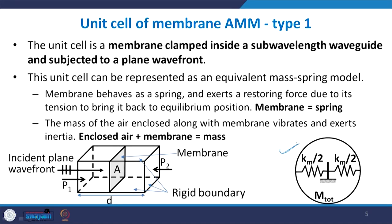The equivalent mass-spring model has the membrane as the spring and the enclosed air plus membrane mass as the total mass. This is m_total = mass of membrane + mass of air contained within the unit cell. If K_m is the stiffness of the membrane, the system oscillates to and fro and can be split into two equivalent springs, giving a total stiffness of K_m/2 × 2 = K_m. This is the mass-spring model of the structure.